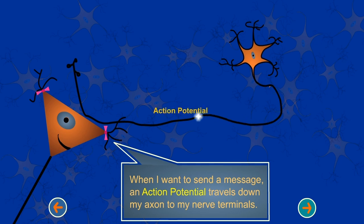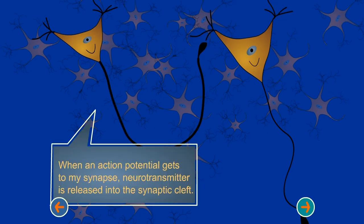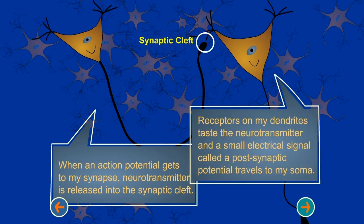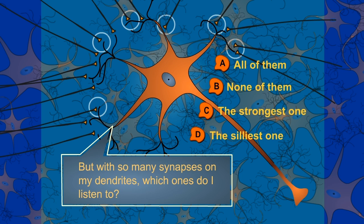When I want to send a message, an action potential travels down my axon to my nerve terminal. When an action potential gets to my synapse, neurotransmitter is released into the synaptic cleft. Receptors on my dendrites taste the neurotransmitter and a small electrical signal called a postsynaptic potential travels to my soma. But with so many synapses on my dendrites, which ones do I listen to?